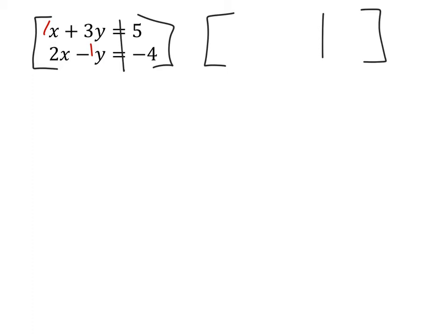So we have a 1 with the x, a 3 with the y, a 2 with that x, and a negative 1 with the bottom y. And then we have what they equal, which is 5 and negative 4.